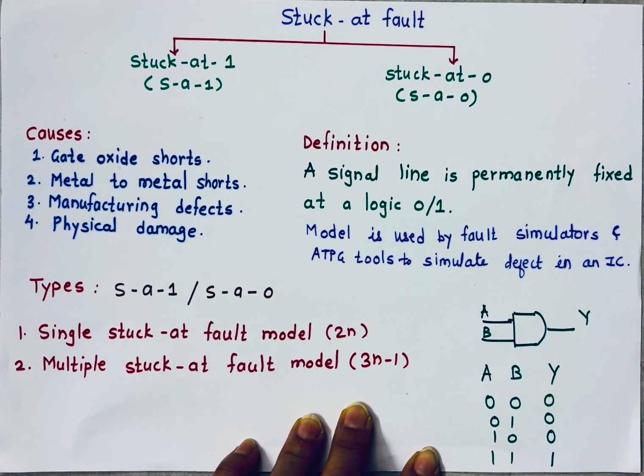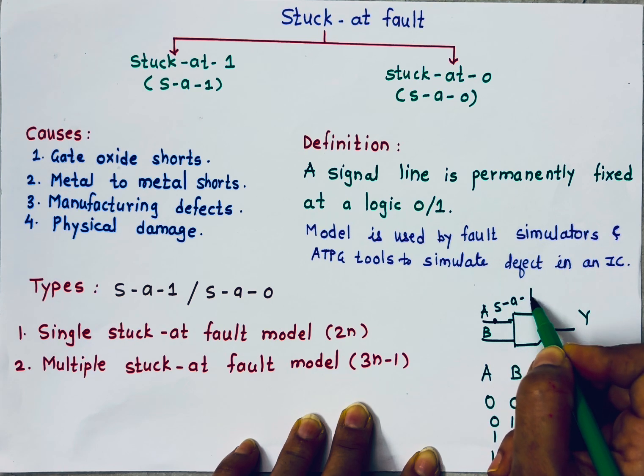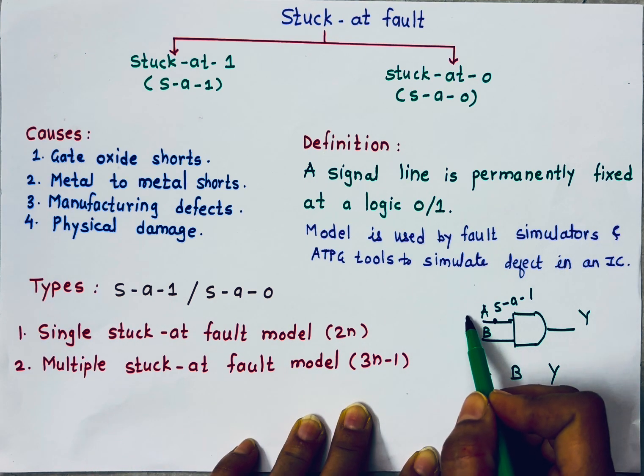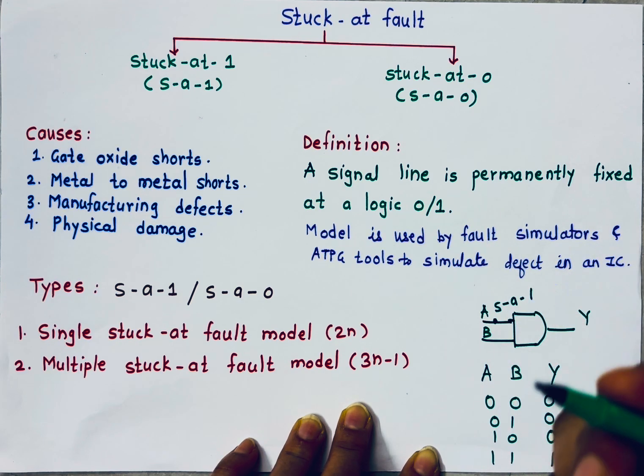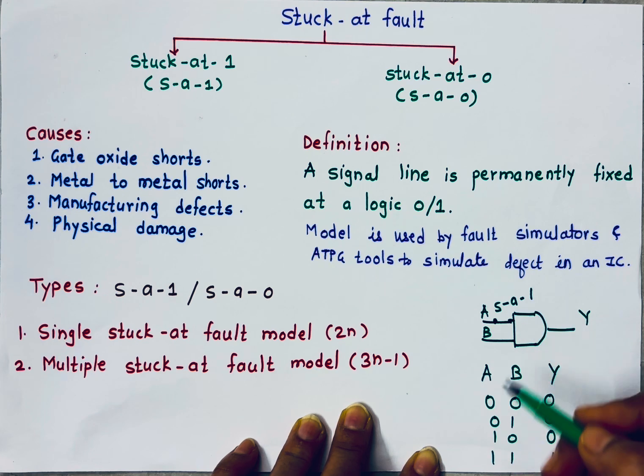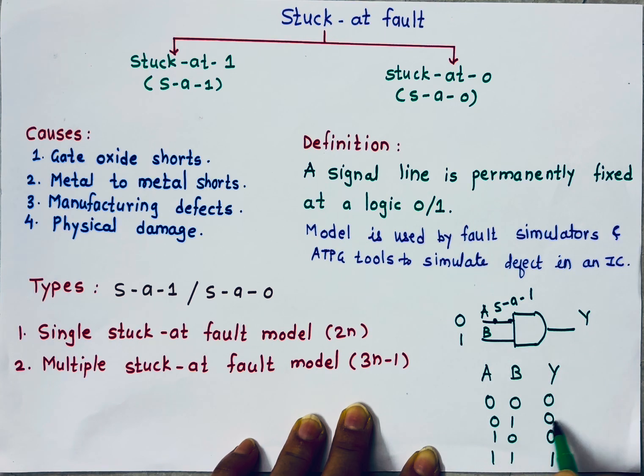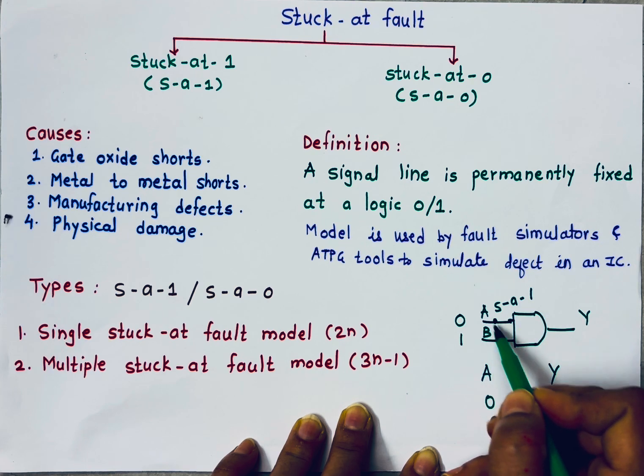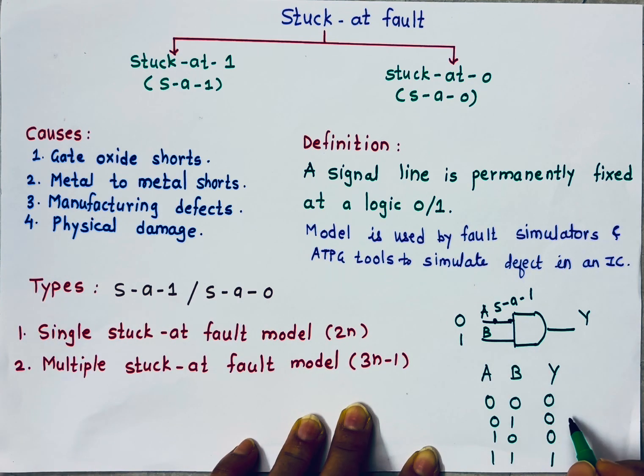But stuck at fault means what? Stuck at 1 means this input is stuck to 1 continuously. It means, even if externally I am pushing 0 here, this input will not accept that 0. It is internally, continuously shorted to 1. When I will apply 0,1, when my input is 0,1, what I should get at the output? I should get 0. But because this input is stuck to 1, this 1 and this 1, so what I will get is 1. My correct output is 0, but what I will get? I will get faulty output as 1.